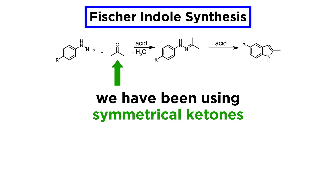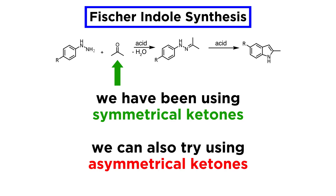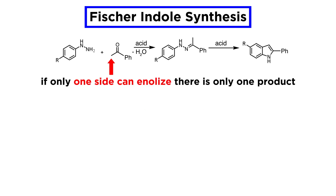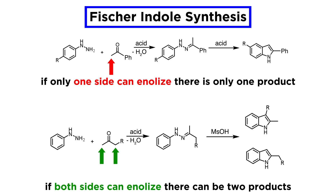So far we have used acetone, a symmetrical ketone where the two sides are equivalent, but there are many other types of ketones that could be involved, some of which could yield multiple products. If only one side of the ketone can enolize, then this is the one taking part in the sigmatropic shift and only one product can form, such as when using a ketone involving a phenyl group. The situation becomes more complex for non-symmetrical ketones in which both sides can enolize — in this case, two products will arise.